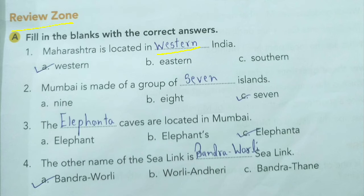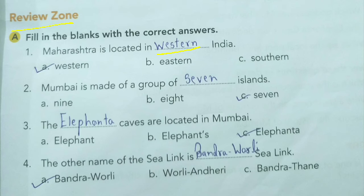Second: Mumbai is made of a group of blank islands. Options: A. 9, B. 8, C. 7. The answer is Seven islands. Third: The blank caves are located in Mumbai. Options: A. Elephant, B. Elephants, C. Elephanta. The answer is Elephanta.